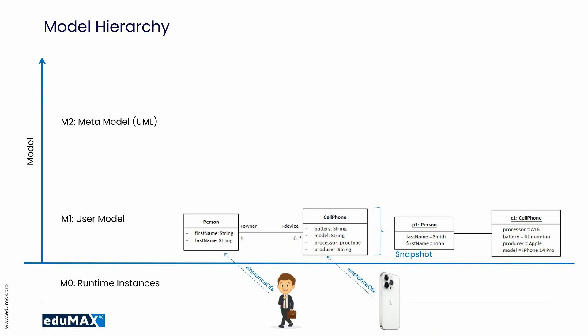If we go up, there is a level M2. We call it meta model, a model about models. The meta model in UML specification is called abstract syntax. This level is like a recipe of the level M1.